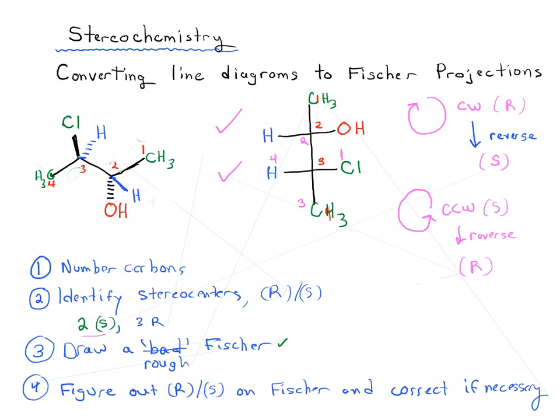But let's say that instead I'd drawn my Fischer projection differently. So let's just change this. So imagine that instead of guessing that the chlorine was on the right-hand side, maybe the chlorine was on the left-hand side instead. So if I'd drawn as my rough Fischer drawn this, then what I would do is figure out my R and S. So this would be one, two, three, four. So this would be, according to this, this would be, it looks like R, but then we reverse it. It's actually S.